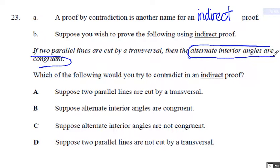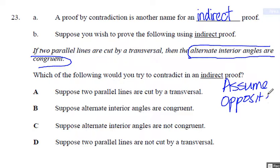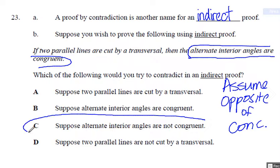If I wanted to start this as a proof, I would want to assume the opposite of the conclusion, which would mean that I would have to assume that the alternate interior angles are not congruent.